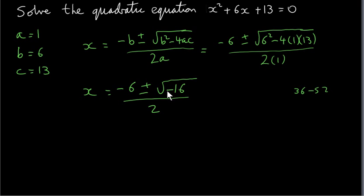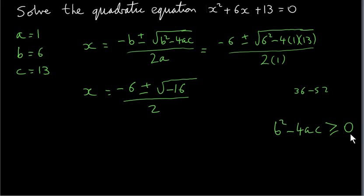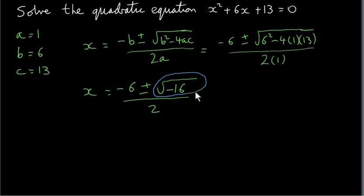The next step would be to evaluate the square root, but there's a problem: what is the square root of minus 16? So now we're going into complex number territory. This equation does not have real solutions. In all the examples you did before, b squared minus 4ac would be greater than or equal to 0. But now we have a situation where b squared minus 4ac is negative. This is where the square root of minus 1 comes in, which we denote by the letter i.